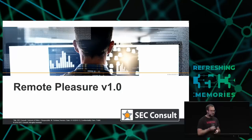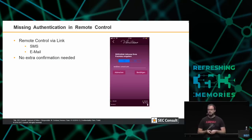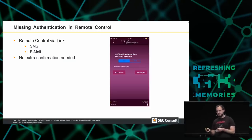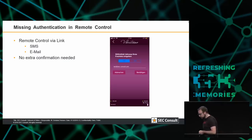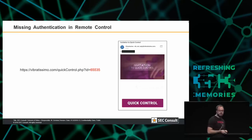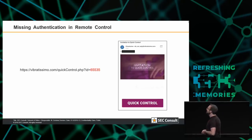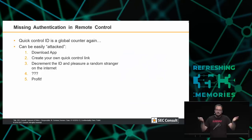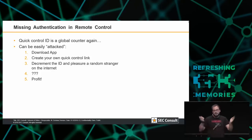The next vulnerability I call Remote Pleasure Version 1.0 — it's 1.0 because there is a 2.0. There is a feature in those apps where you can create remote control links that can be sent via SMS or email, and everyone who has those links can directly control the devices with no extra confirmation needed. There is a button in the email called Quick Control, and there is an ID — just a global counter again. An attacker can download the app, create their own Quick Control link, decrement the ID, and pleasure just random strangers on the internet.